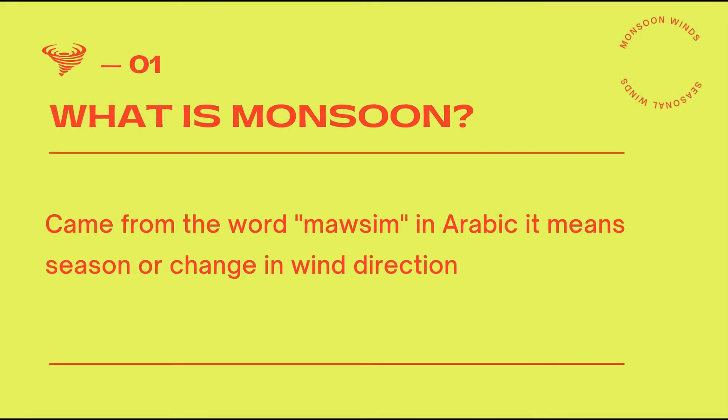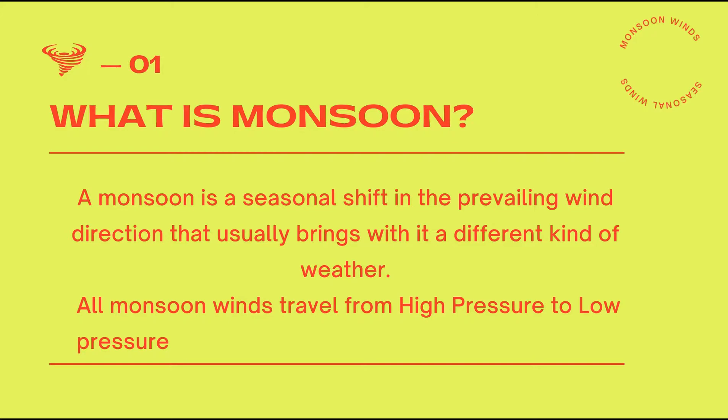First, let's define what a monsoon is based on its etymology. Monsoon came from the Arabic word 'mausim', which means season or change in wind direction, developed from the Portuguese word 'moncao' and became the English word 'monsoon' in the late 16th century. By definition, a monsoon is a seasonal shift in the prevailing wind direction that usually brings with it a different kind of weather.